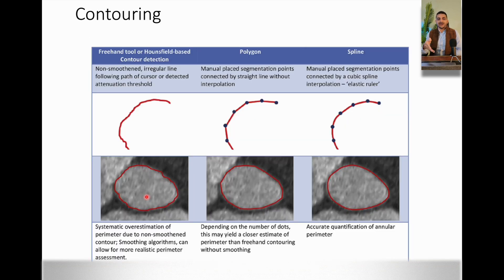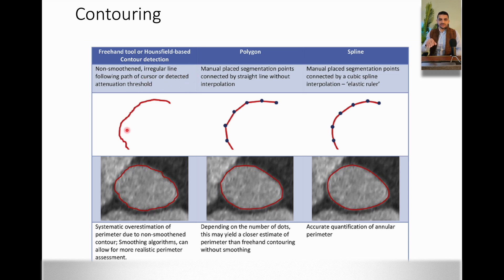What about contouring? This is how we do it in the step-by-step approach. When you use the pencil freehand, your perimeter will increase because the irregular line follows the path of the cursor — fine movements are all accounted for in the perimeter. However, the closed polygon is the most accurate method, and this is the one I use in order to get an accurate perimeter and an accurate area.